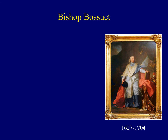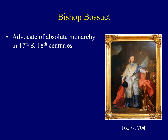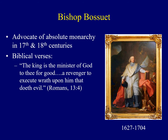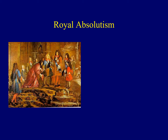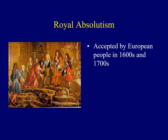One of the most influential advocates of royal absolutism and the divine right of kings is Bishop Bossuet of France. He argued that the Bible could be used to justify the absolute power of monarchs — that God established kings who reign over the people. Biblical verses were used to justify it, such as: 'The king is the minister of God to thee for good, a revenger to execute wrath upon him that doeth evil,' and 'Submit yourselves to every ordinance of man for the Lord's sake, whether it be to the king as supreme or unto governors.' The bottom line was that average people in Europe in the 1600s and 1700s accepted the concept of royal absolutism, further justified by religious leaders.